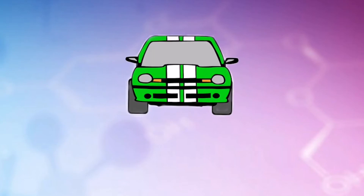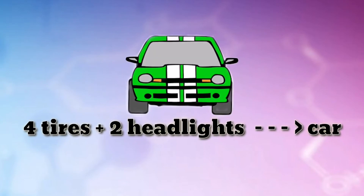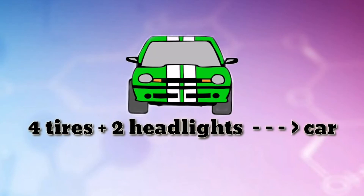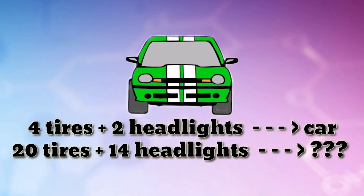In order to assemble a car, four tires and two headlights are needed, among other things. In this example, imagine that the tires and headlights are reactants while the car is the product formed from the reaction of four tires and two headlights. If you have 20 tires and 14 headlights, how many cars can be made?